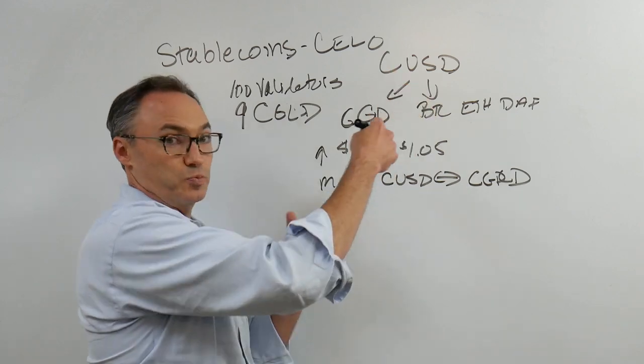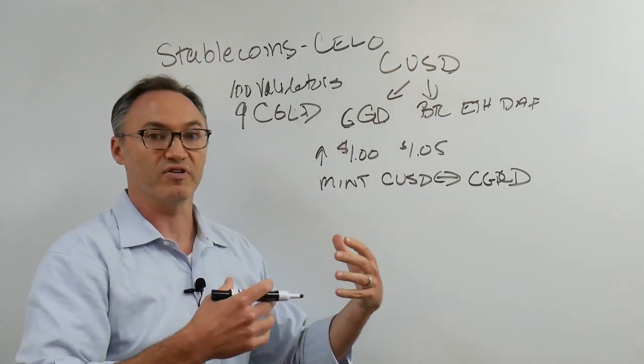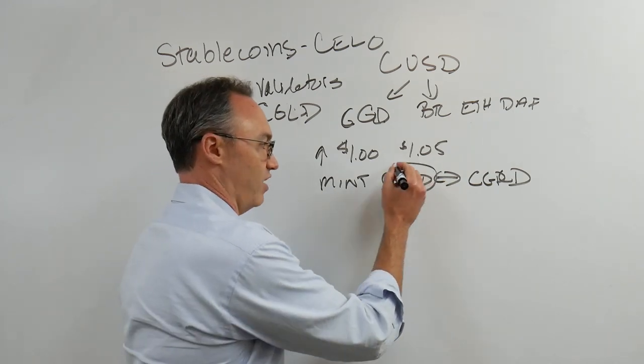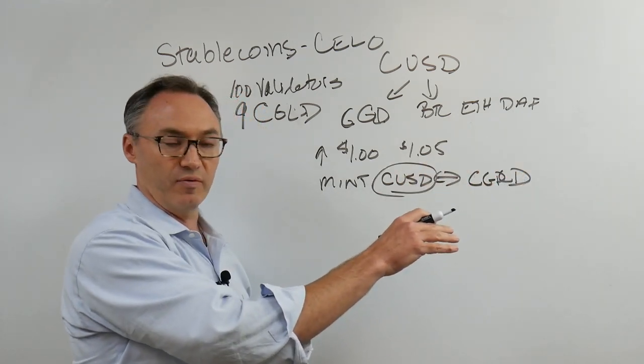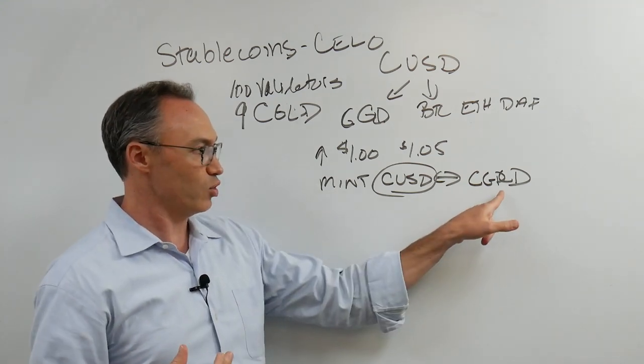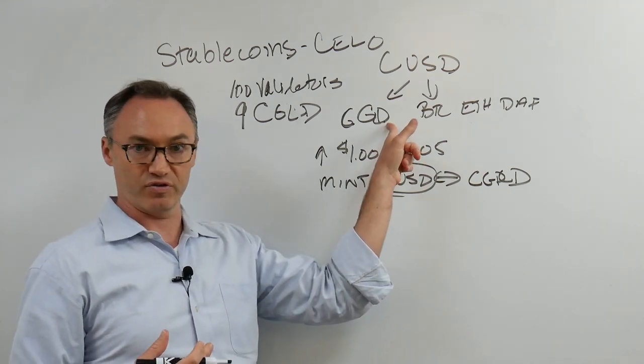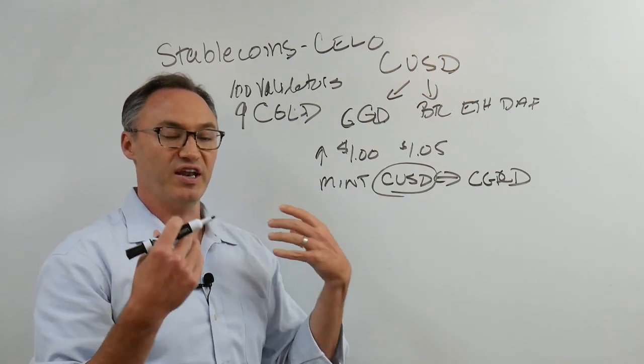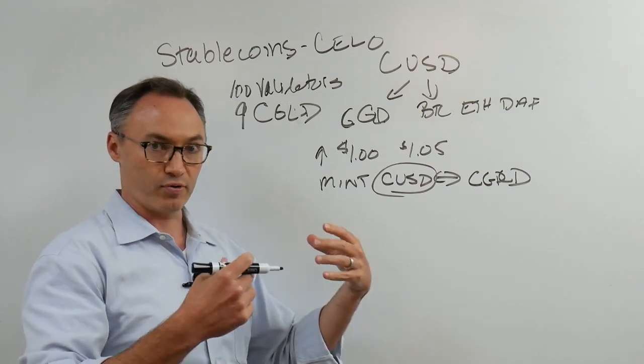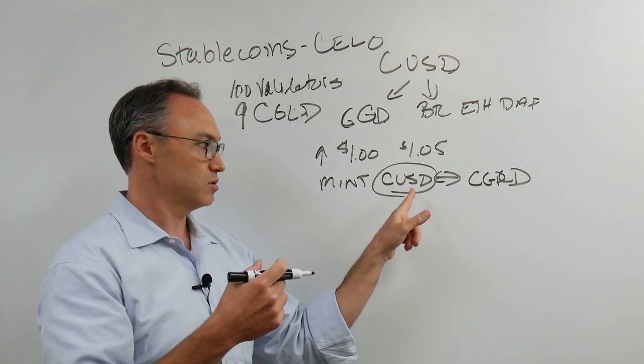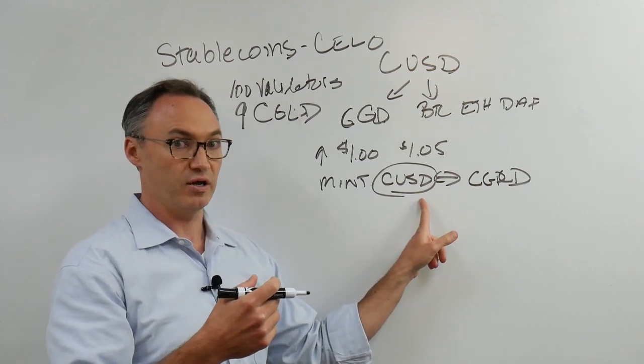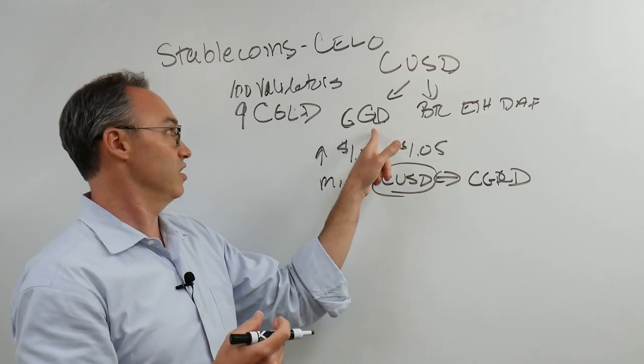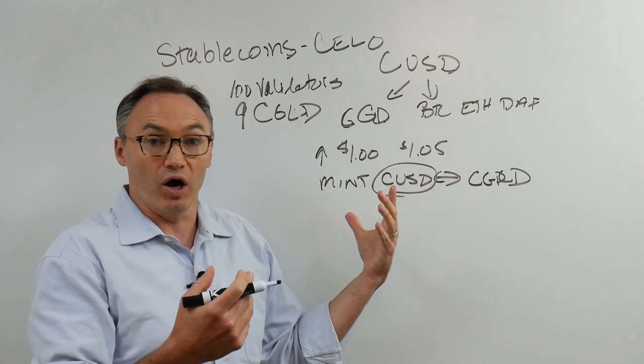What that means is it bumps up the price or value of Celo gold because the protocol is out there buying it with the CUSD stablecoin. That's why it's good - the value has gone up because this protocol, the algorithm, has created this kind of out of thin air, put it out there in the market, and bought this back and stuck it back in the reserve.